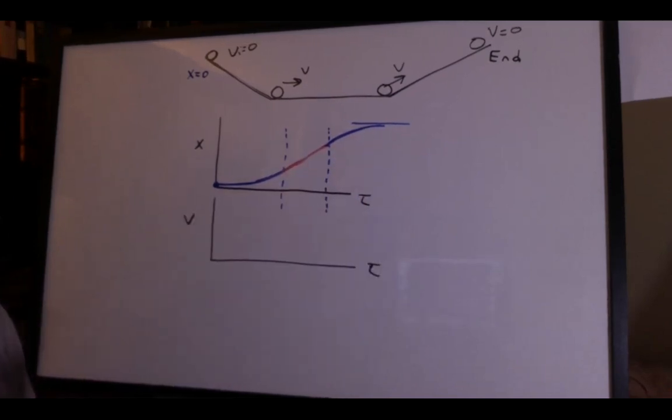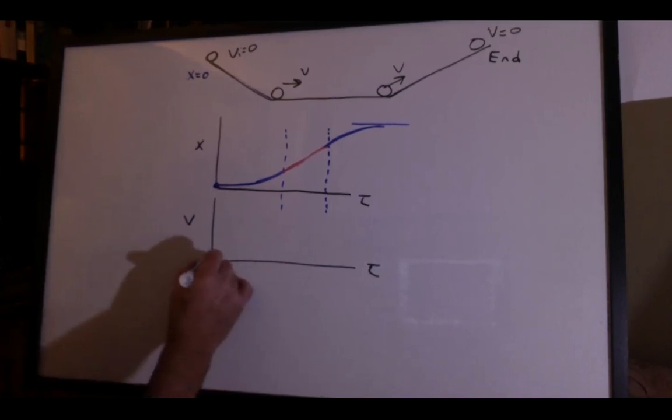Now what about a velocity versus time graph? Pause the video before I go on and you try it first. So if we start with zero velocity, I need a point here.